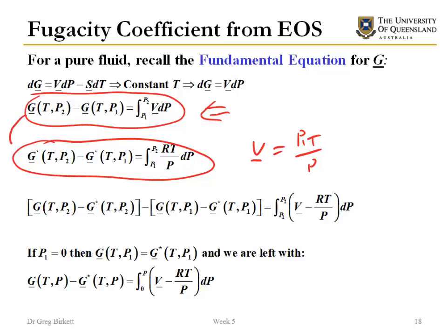If we take these two equations away from each other, then we get this equation here. If we then take the limit of this and say that pressure one is equal to zero or very close to zero, then the Gibbs free energy there has to be ideal.